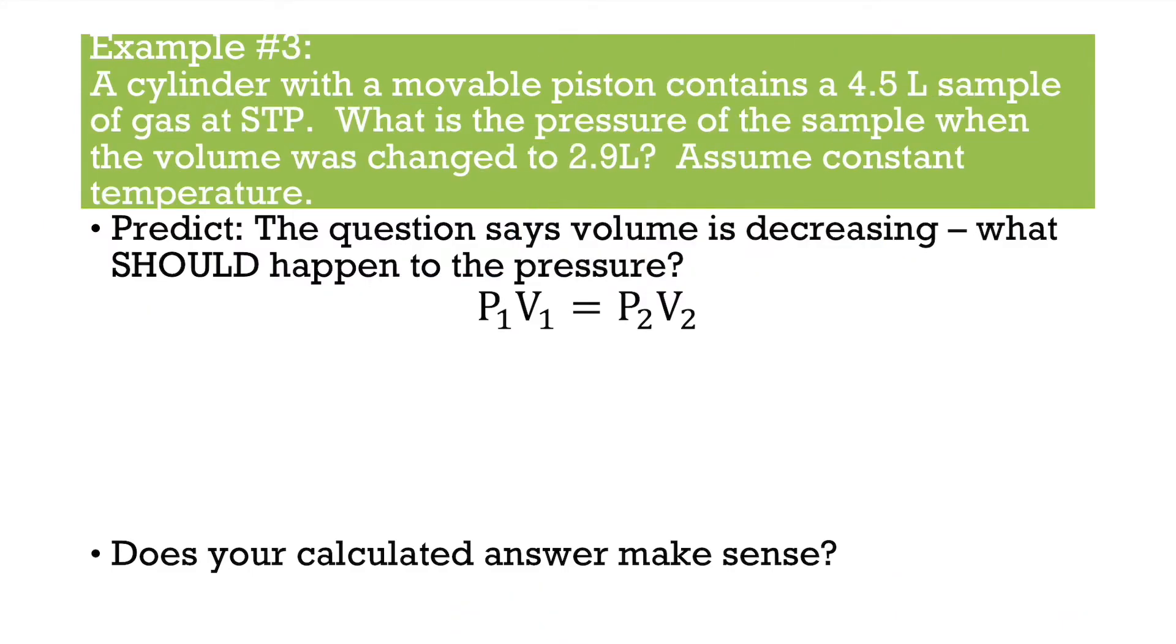Okay, last question. A cylinder with a movable piston contains a 4.5 liter sample of a gas at STP. What is the pressure of the sample when the volume is changed to 2.9 liters? Assume constant temperature. Okay, so first let's make our prediction. It says volume is decreasing. So our prediction, if volume decreases, our pressure should increase.